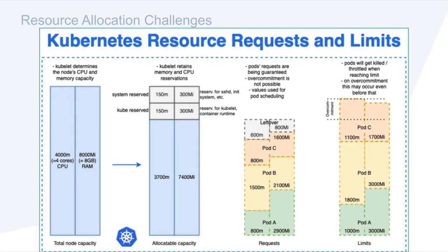The same applies for CPU requests, but because CPU is a rechargeable resource, the negative effects are throttling and poor application performance. The second resource allocation parameter is the limit. The limit instructs Kubernetes to set a limit for the control group in which the process is running on the node. The application cannot cross that limit without being killed or throttled for memory and CPU respectively. The reason to do this is to protect all other applications on the cluster.